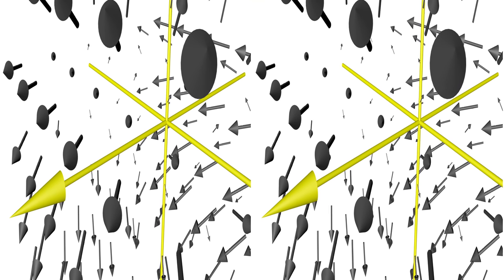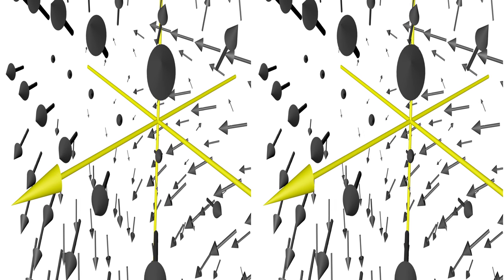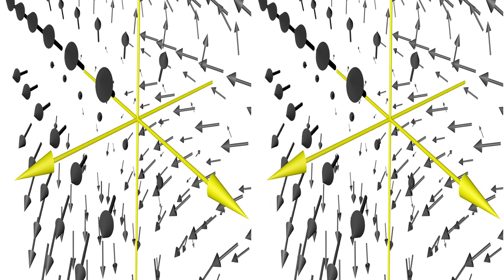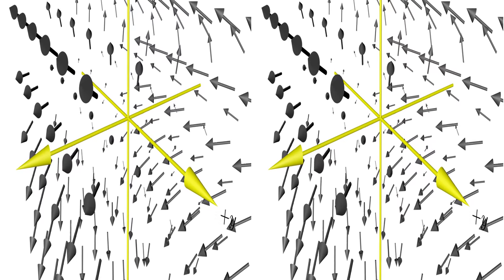Imagine you are standing somewhere in a vector field. If you move slightly in a particular direction, the field changes and the change is dependent on the field and the direction in which you are moving.